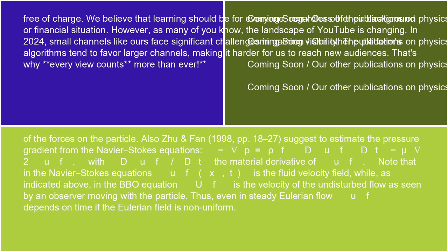as indicated above, in the BBO equation u_f is the velocity of the undisturbed flow as seen by an observer moving with the particle. Thus, even in steady Eulerian flow, u_f depends on time if the Eulerian field is non-uniform.